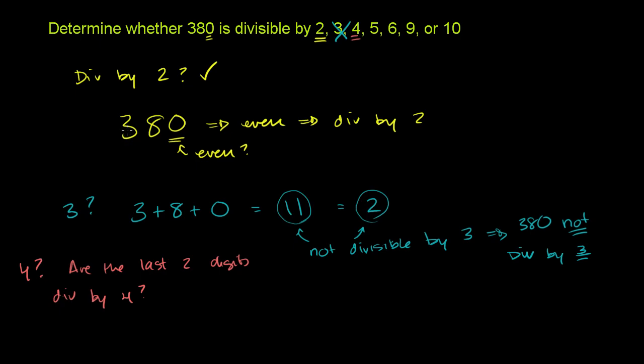And this comes from the fact that 100 is divisible by 4. So everything on the 100s place or above is going to be divisible by 4. You just have to worry about the last part. So in this situation, is 80 divisible by 4? Well, 8 is definitely divisible by 4. 8 divided by 4 is 2. 80 divided by 4 is 20. So this works. Yes. So since 80 is divisible by 4, 380 is also divisible by 4. So 4 works.